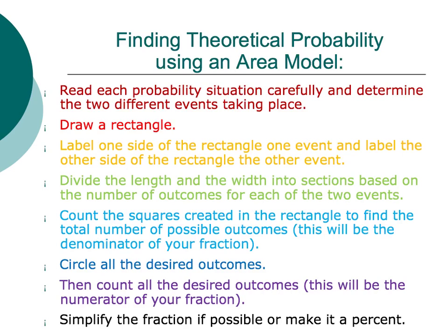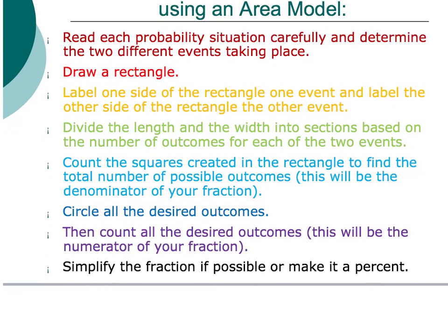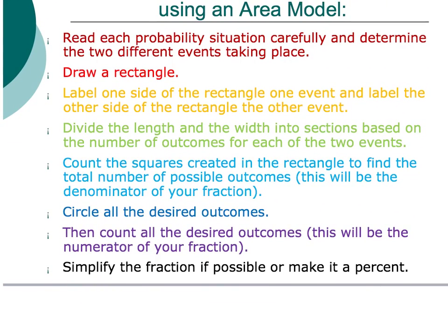Then circle all the desired outcomes once you put in your information. The next step is to count all the desired outcomes — this will be the numerator of your fraction. At the end, simplify the fraction if possible or make it into a percent. We're going to look at some possibilities of how you would do an area model with a couple of different situations.